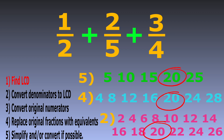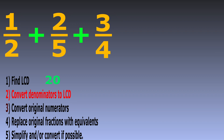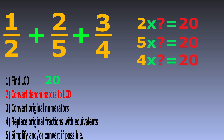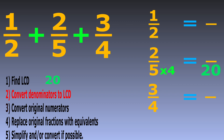Step 2: we convert the original denominators to the lowest common denominator. We ask what we multiply each denominator by to get 20. Listing our fractions: 5 times 4 equals 20, 4 times 5 equals 20, and 2 times 10 equals 20. So now our denominators are all equal to the lowest common denominator.